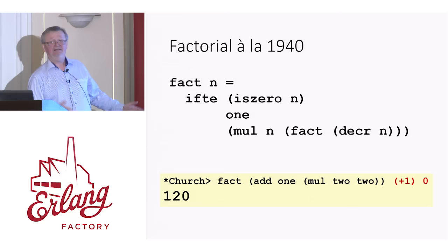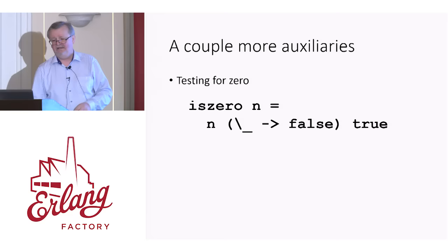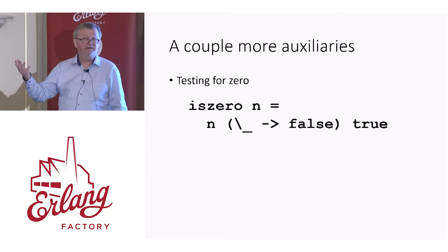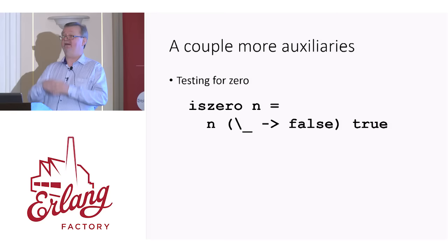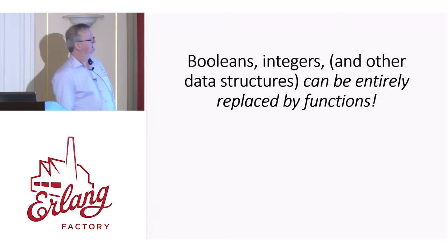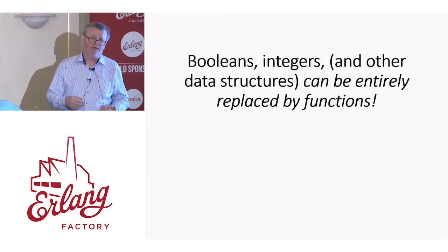There are a couple of auxiliaries that still need to be defined, like is-zero. How can I tell whether a number is zero? I iterate a loop body that returns false n times starting from true. If there are zero iterations, I'll get true; if there's more than zero iterations, I'll get false. And the other one was decrement — the less said about that the better, but you can do it. So we see that Booleans, integers, and also any other data structure can be represented entirely by functions.